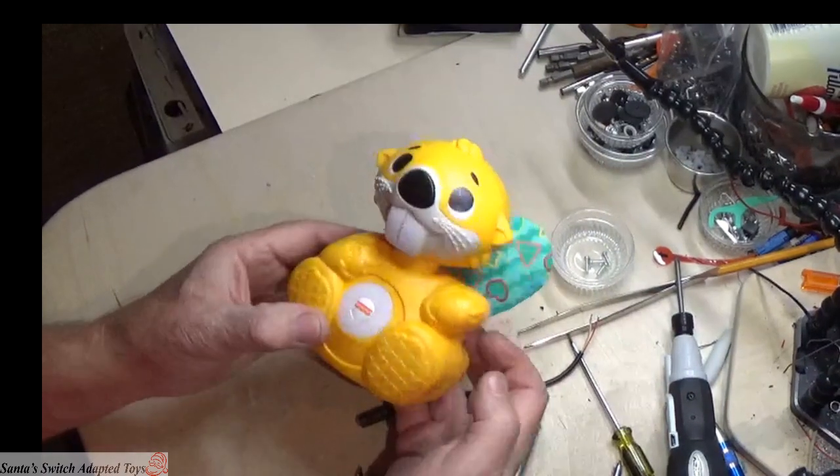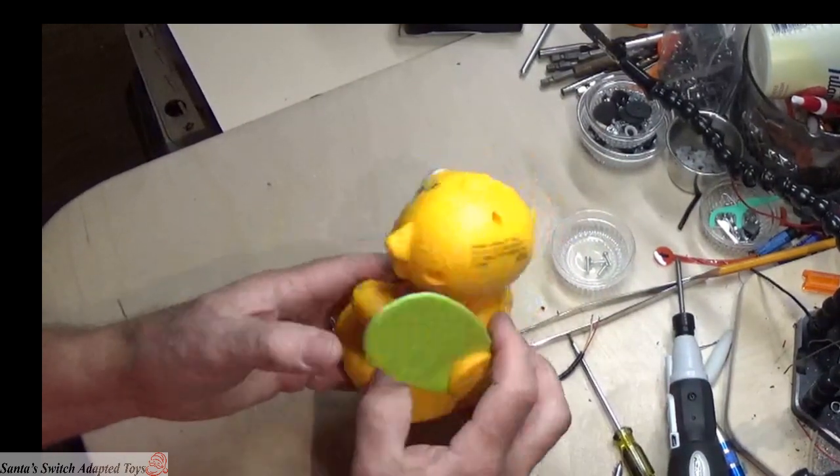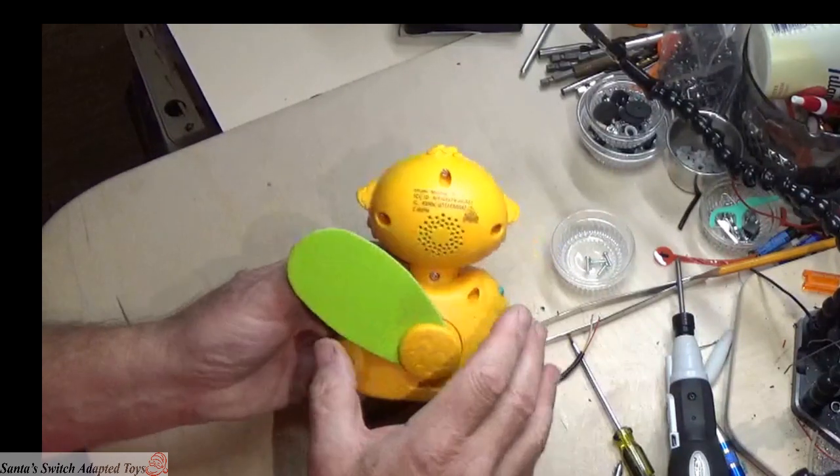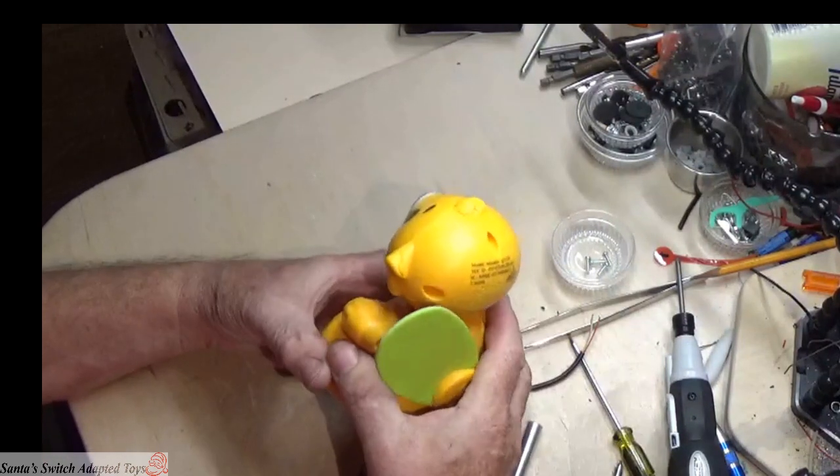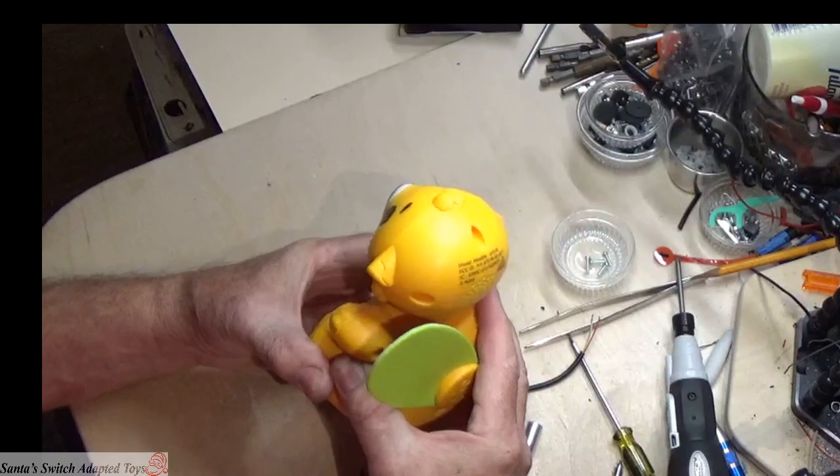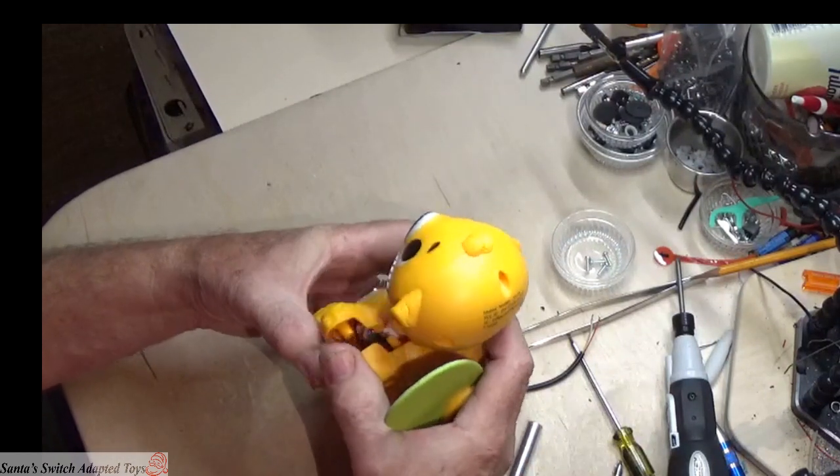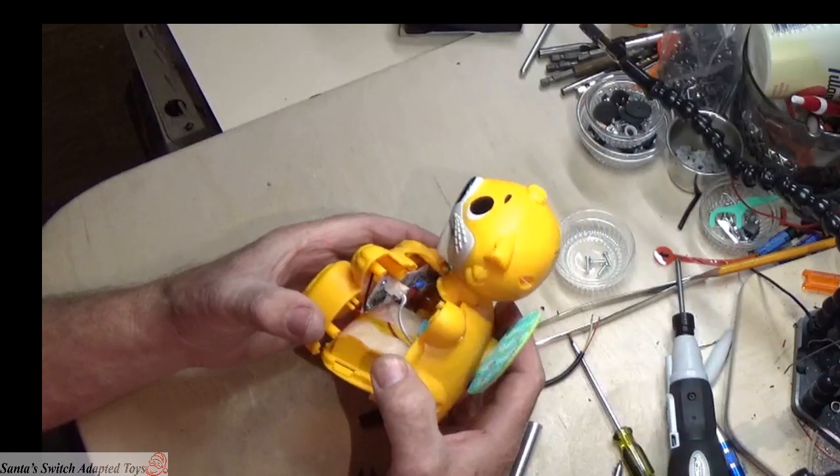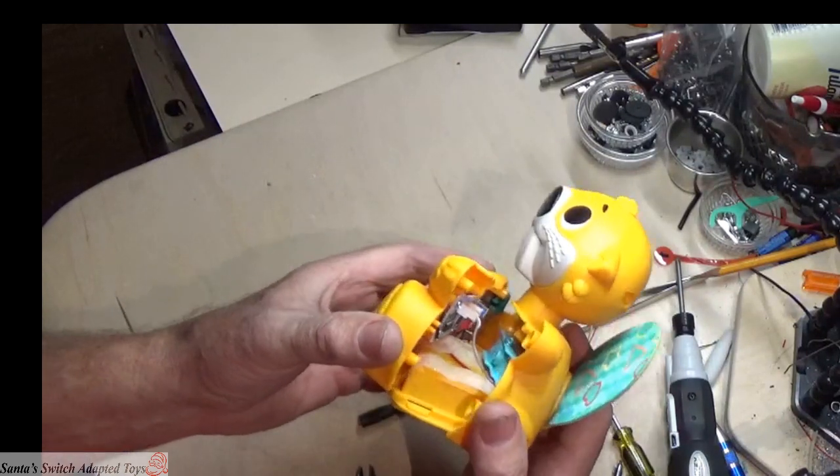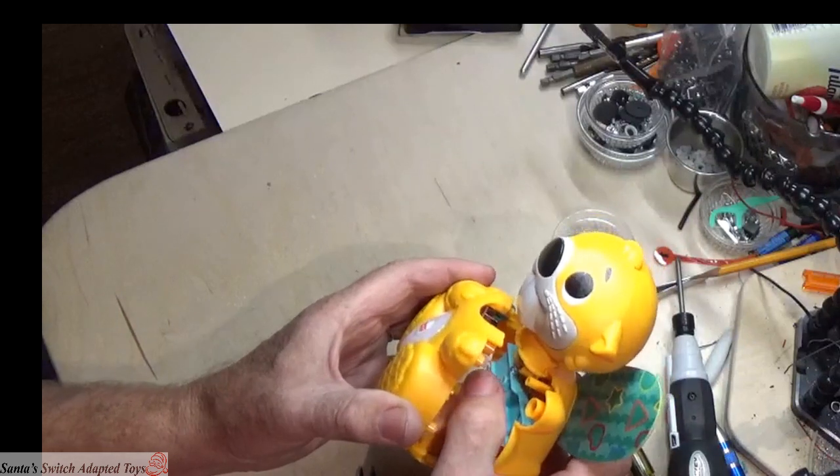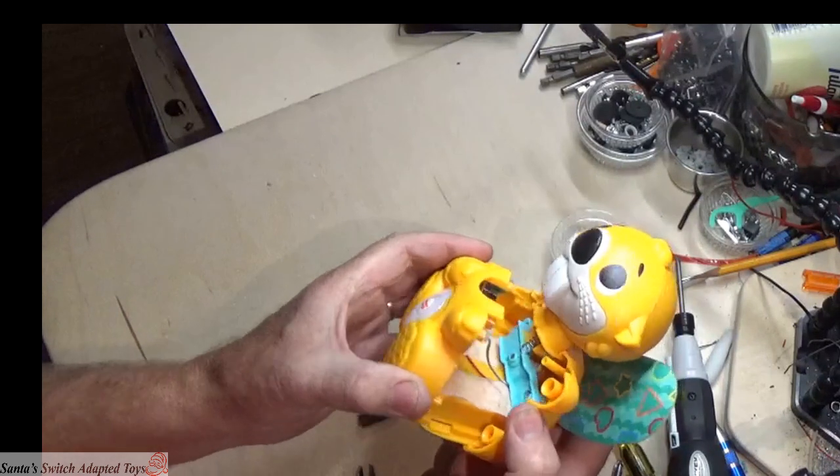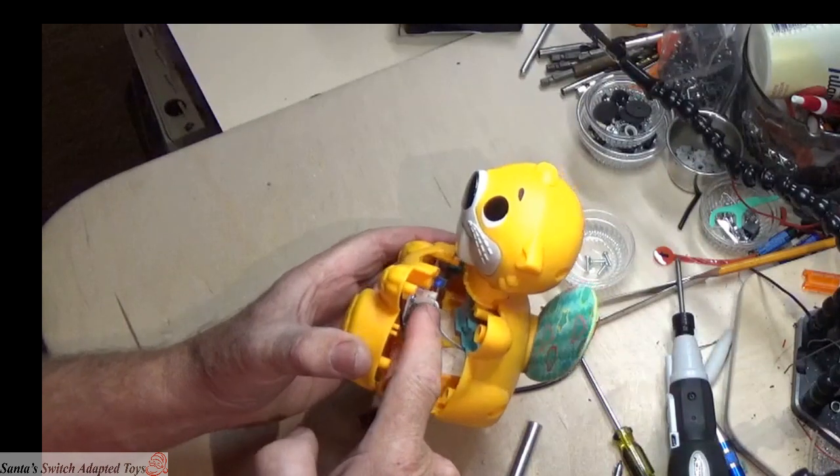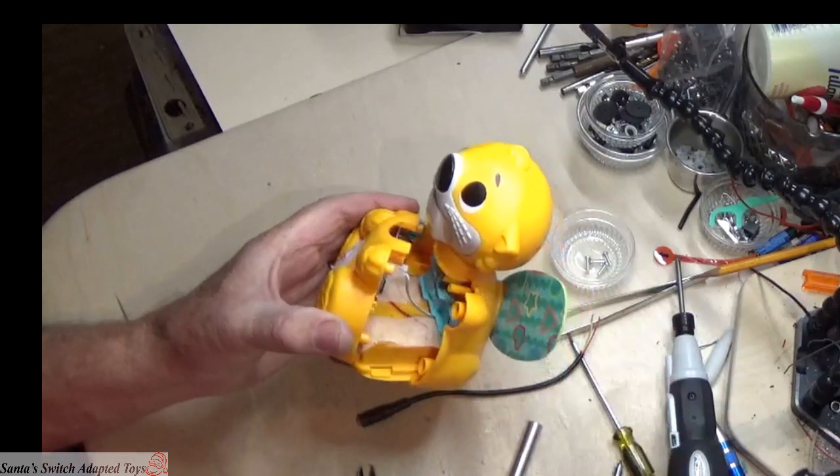I'm going to show you how I adapt him. I've already pulled the four screws in the back that hold the body in place. We're not doing anything with the head on this toy. As you pull it apart, you're going to notice it doesn't come apart very well because there's a cable wiring that jumps across there, and that is the speaker wire. The speaker is in the head of this toy.